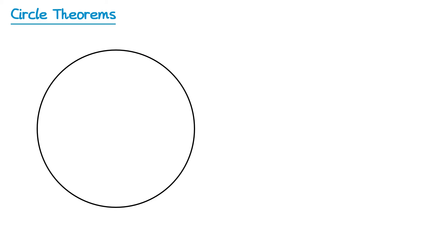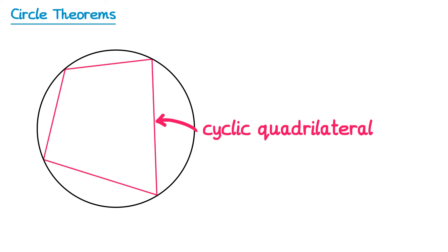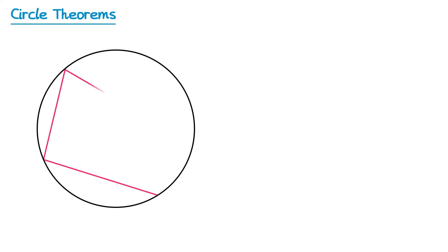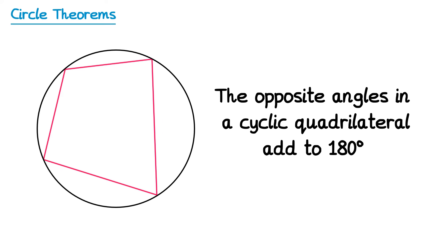For the next theorem we need to learn some more terminology. If you draw a quadrilateral where all four of the sides touch the circumference of the circle, this is known as a cyclic quadrilateral. It's only true if all four corners of the shape are on the circumference. For example, a shape where one corner isn't on the circumference is not a cyclic quadrilateral. The theorem states that the opposite angles in a cyclic quadrilateral must make 180 degrees.